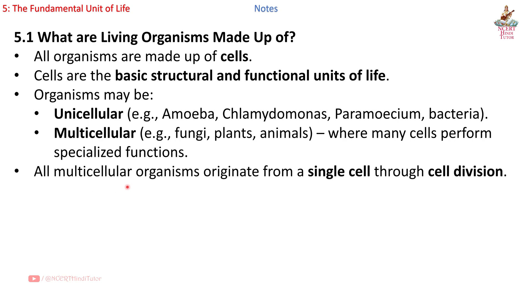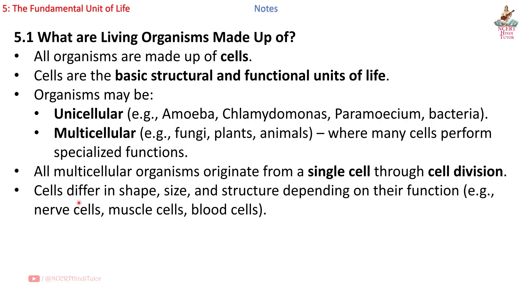All multicellular organisms originate from a single cell through cell division. Cells differ in shape, size, and structure depending on their function, e.g. nerve cells, muscle cells, blood cells.